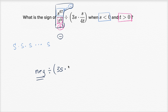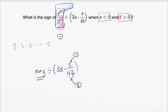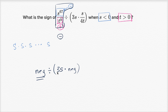Now we're dividing by 3s times s over 4t. What is s divided by 4t? s is negative, t is positive, so 4t is positive. Negative divided by positive is a negative. And 3s: s is negative, so 3s is negative. So you have a negative times a negative, which is positive.